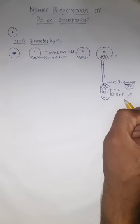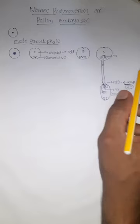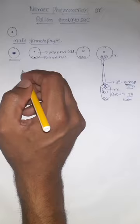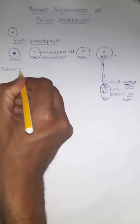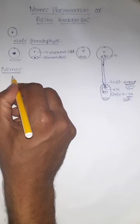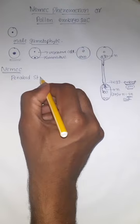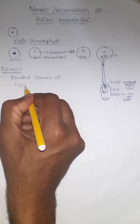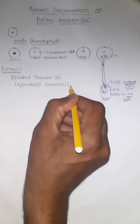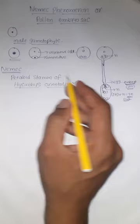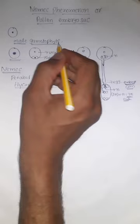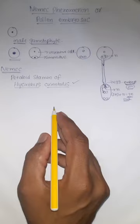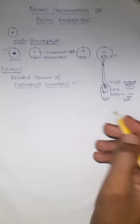This is actual procedure or actual function of male gametophyte or pollen grain. But a scientist called Nemec, he observed an abnormality in petaloid stamina of a plant species called Hyacinthus orientalis. This is a plant species. In this plant species, he observed that an abnormality in the function of male gametophyte. We will see now, that is nothing but Nemec phenomenon. He observed that instead of this function, he observed somewhat different function. Now, we will see what is that.